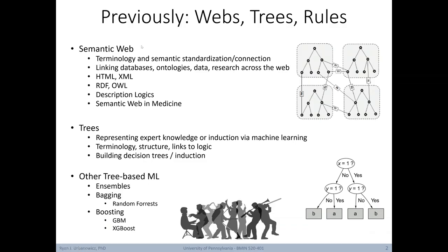In our last lecture, we covered semantic webs, we learned about trees as another form of knowledge representation, and also learned about decision trees as an induction method for machine learning. And lastly, we gave a tour of other machine learning algorithms based on decision trees — in particular, ensembles, bagging, and boosting.